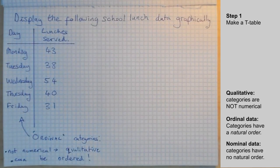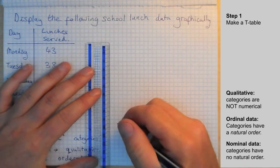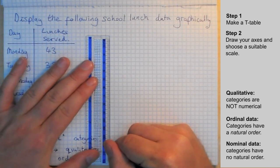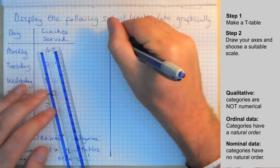So we start by simply making our axes. We are going to make a bar graph because ordinal data should be displayed in a way that preserves the natural order of the categories.